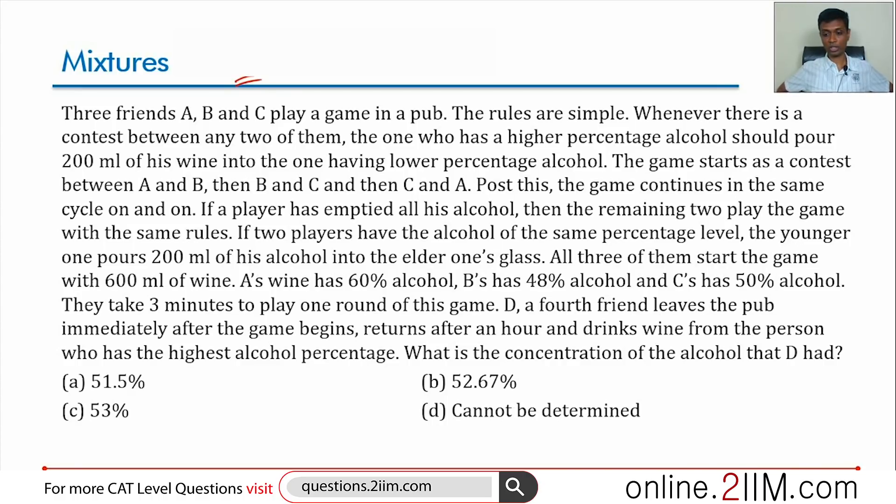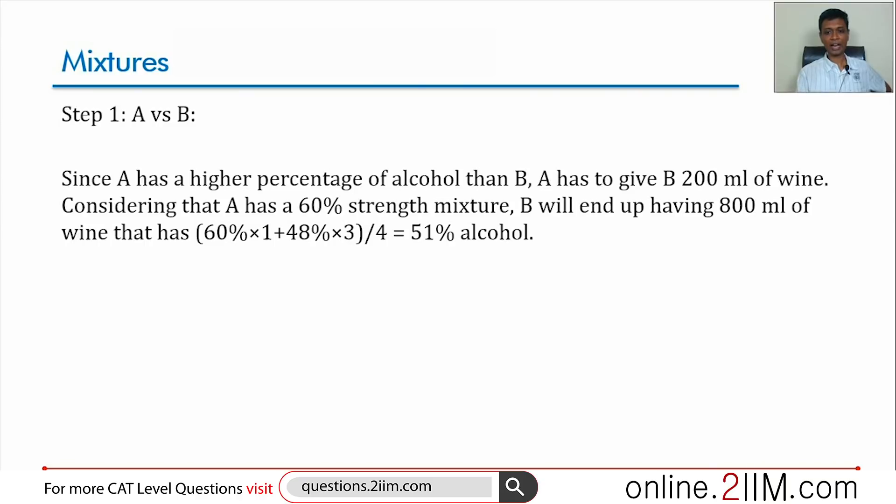What is the concentration of alcohol that D had? It's a long question but the idea is simple. So forget about what D should have. Let's do one step. Let's find out what happens when A plays with B, then we'll build on that. A has 60% alcohol, B has 48% alcohol. A will take 200 ml and pour into B.